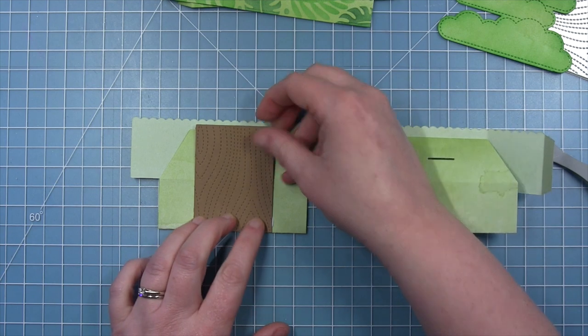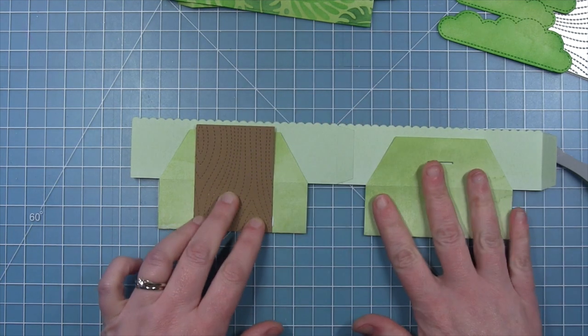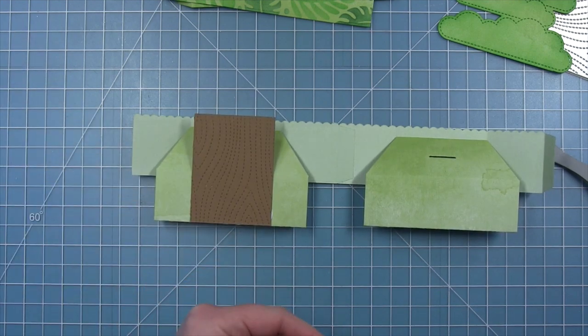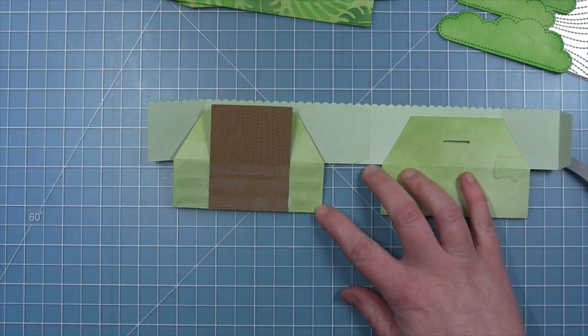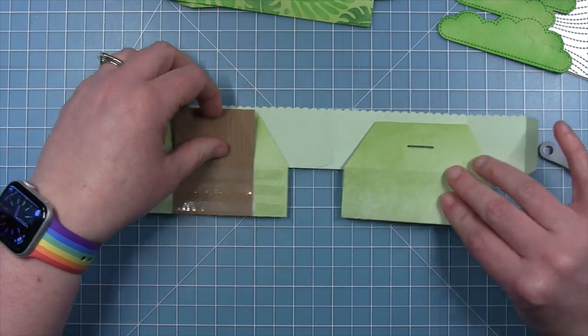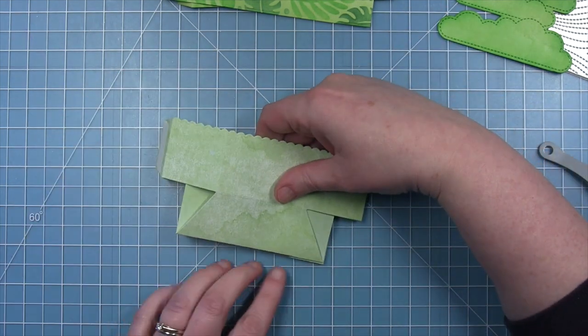So I'm just using some liquid glue. This is going to be sandwiched between the two big rectangular pieces, just like the cloud insert would be.